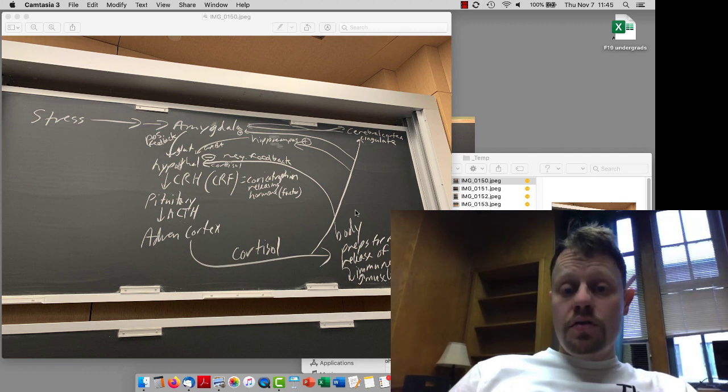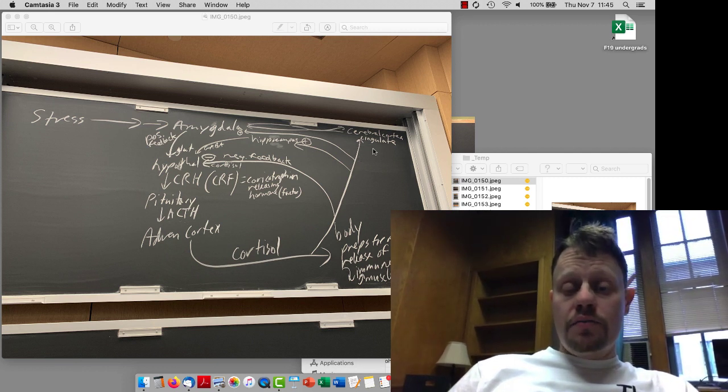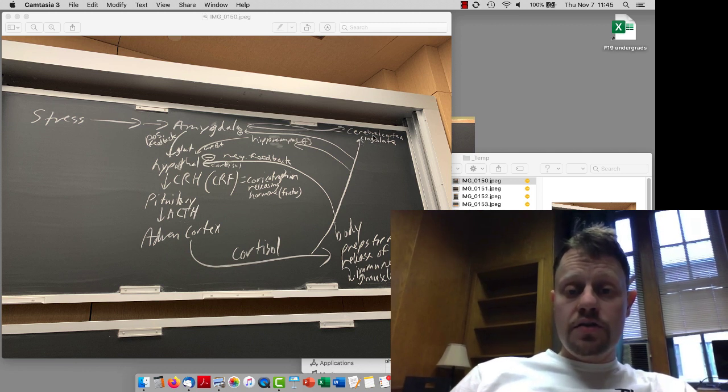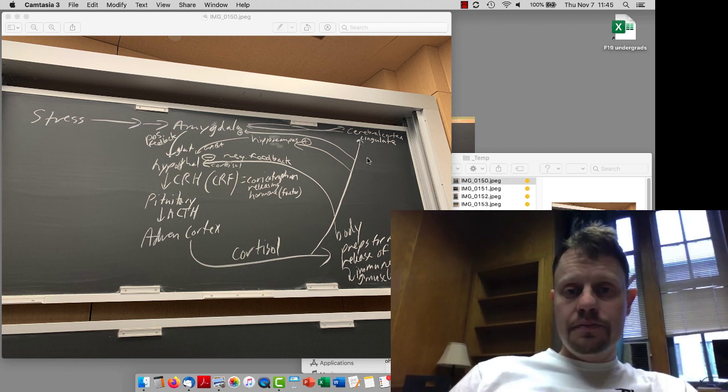The cortisol also goes into the brain and can affect cognitive perceptions of emotion and cognitive perceptions of stress in the cingulate cortex.